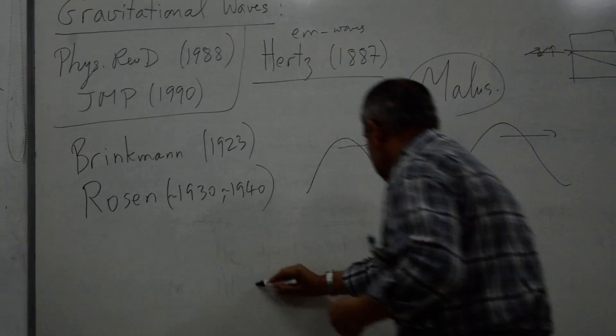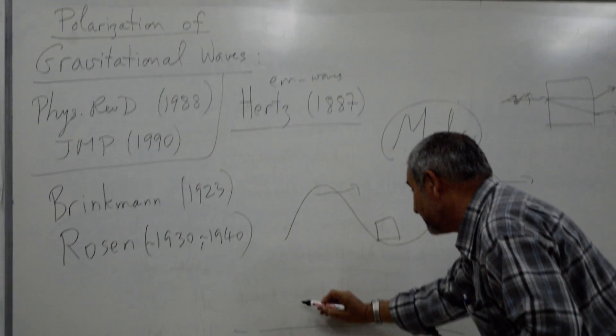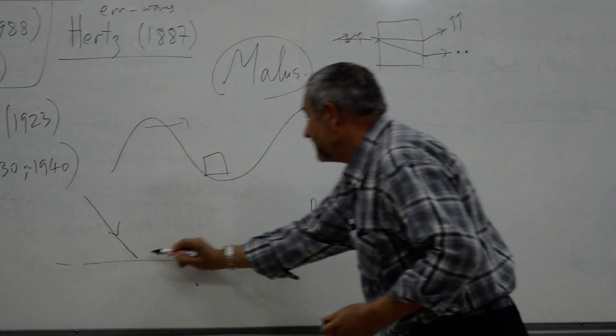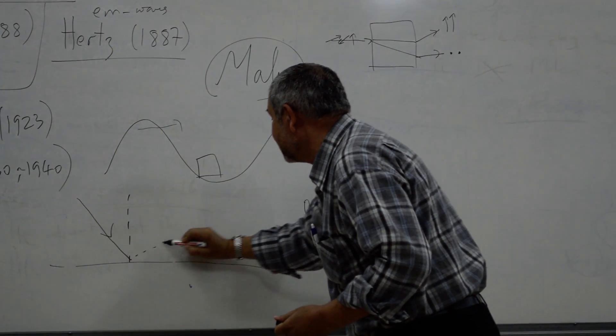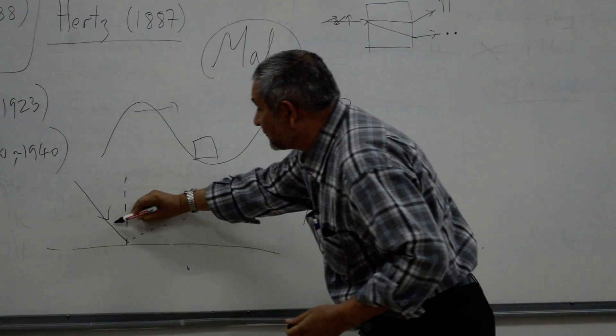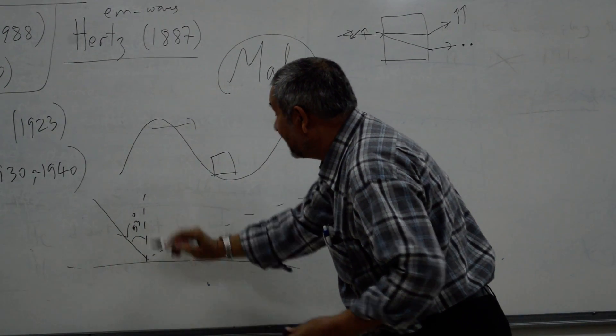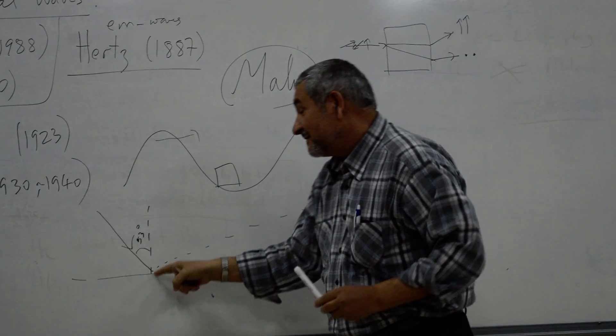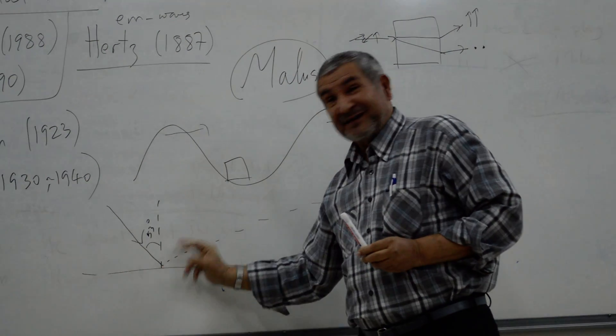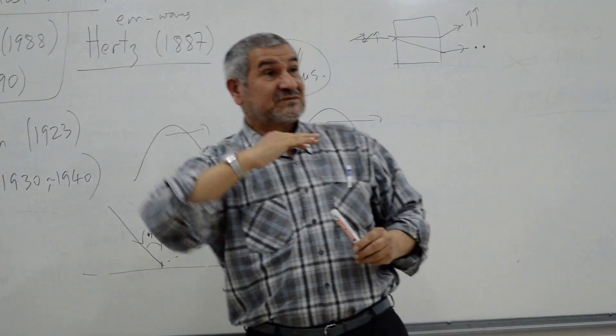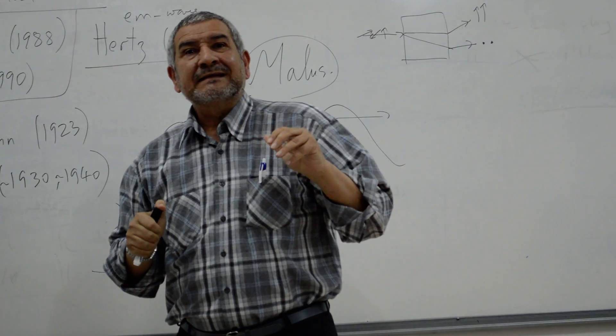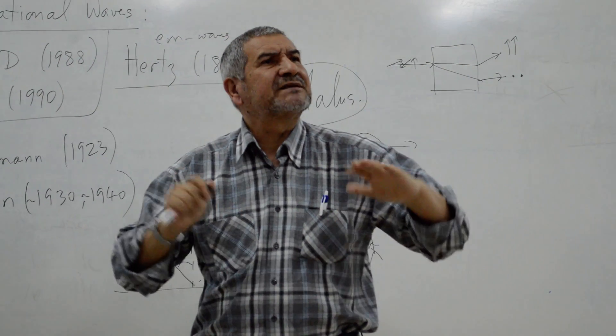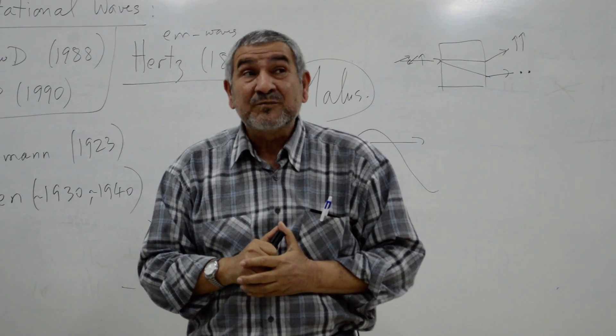That means, when the angle - suppose this is the surface of the water. Light comes. You are here. This is the normal. And then reflection comes to your eyes. This is 53 degrees. Then you see the glaring. But if you move up, down a little bit, from the same point you do not see. But different point, because ripples are continuous.